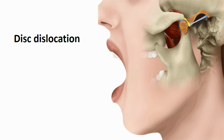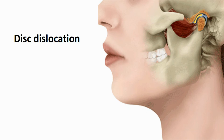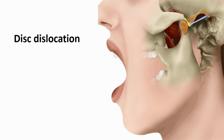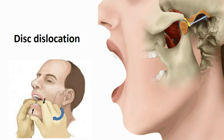Other TMJ disorders include disc dislocation, which is complete dislocation of the disc from the joint. During opening, the disc becomes placed anterior to the temporal eminence and cannot return to its normal position. In this case, the mandible should be reduced to its normal position by manual jaw reduction.